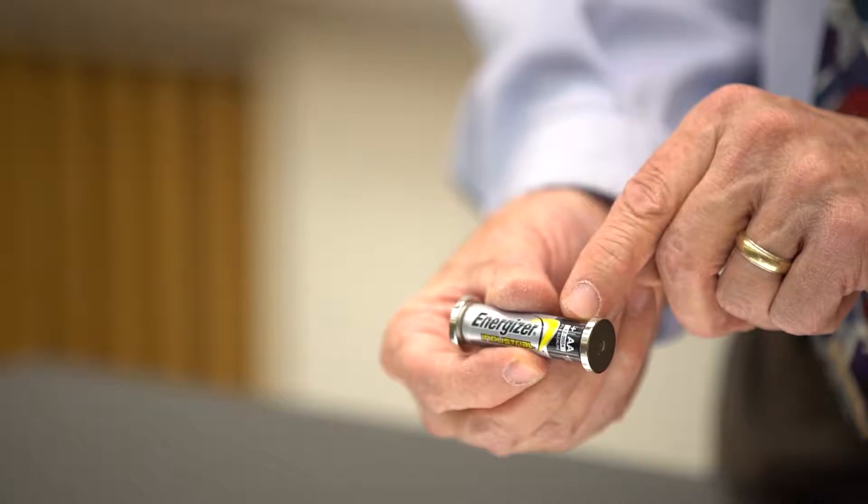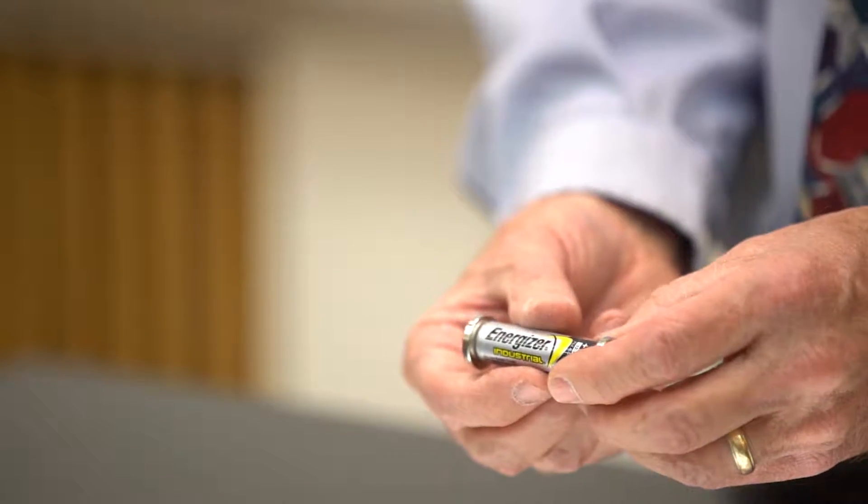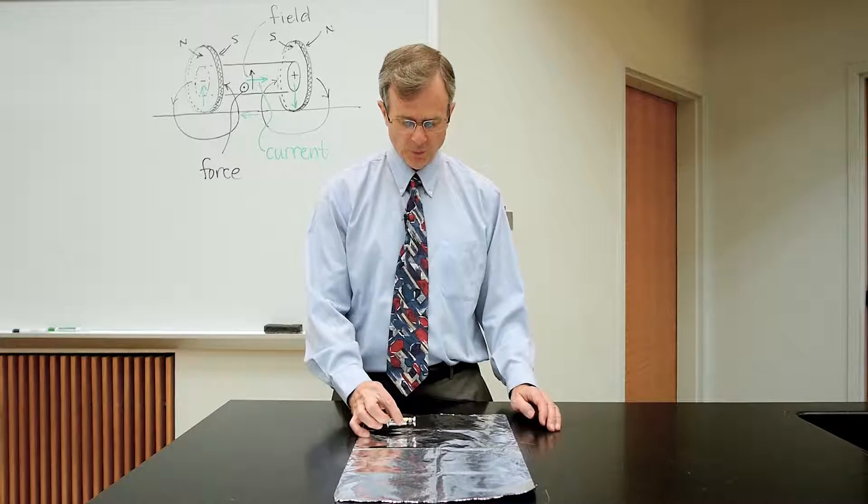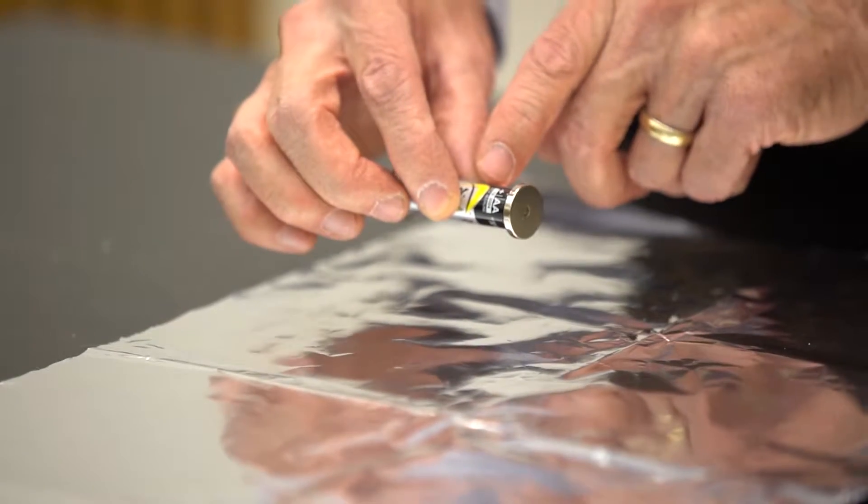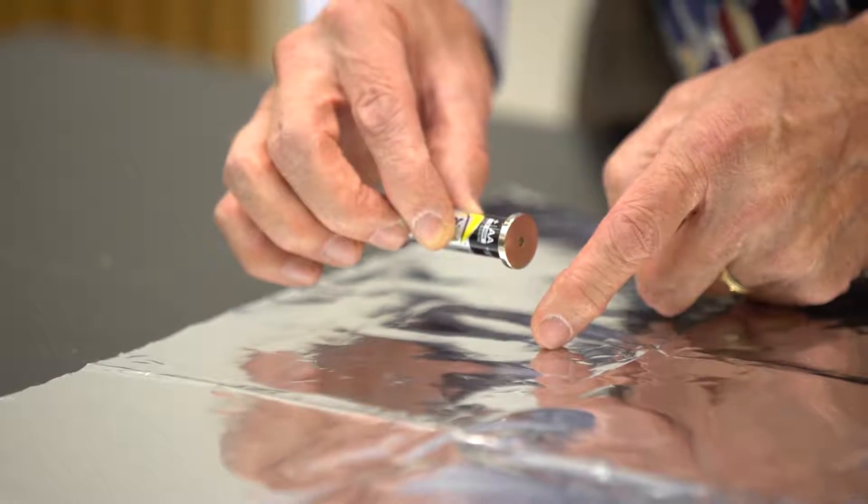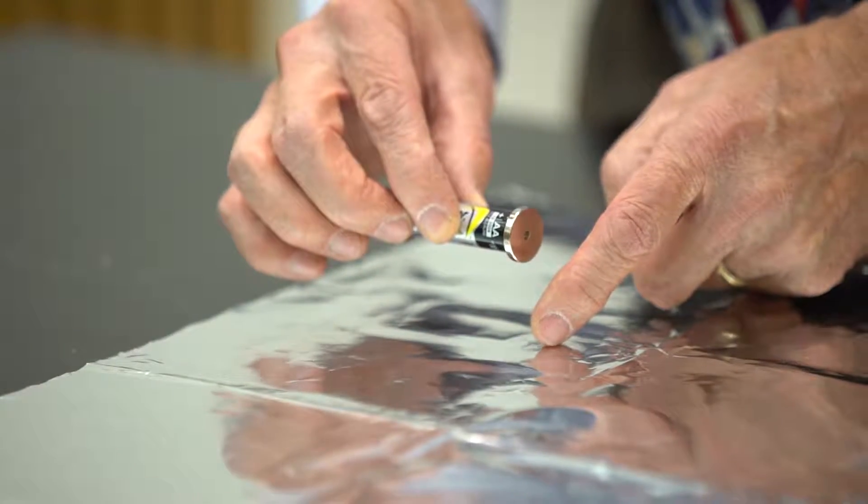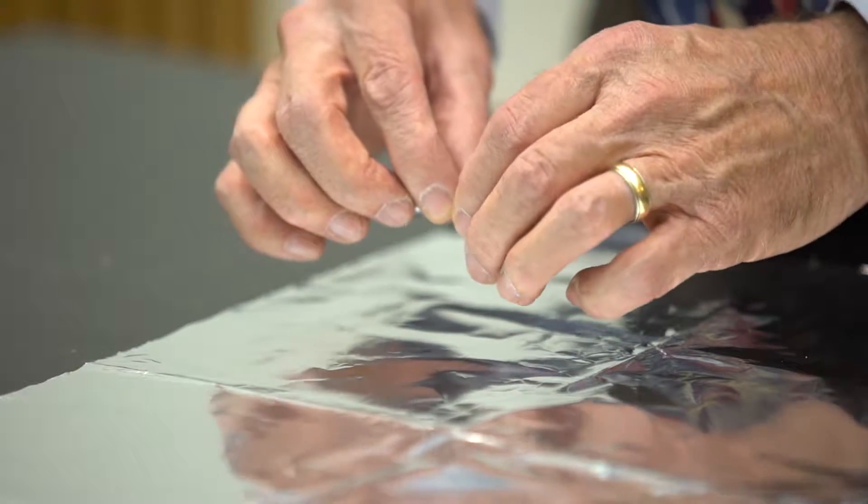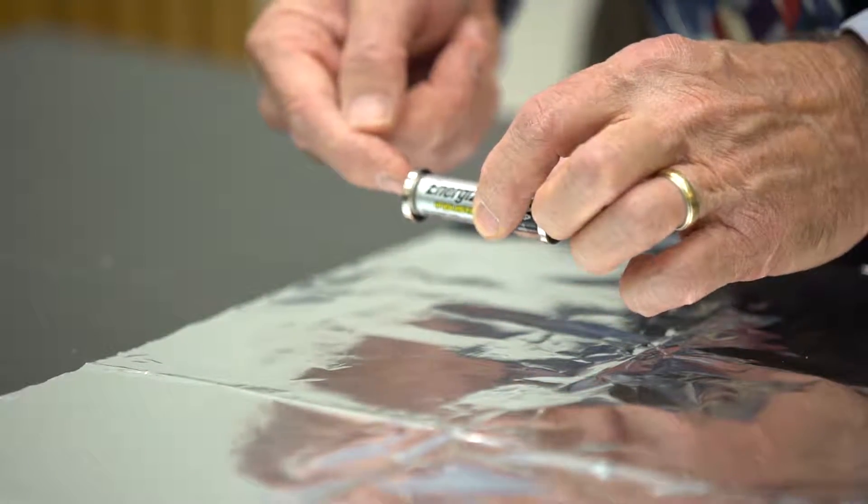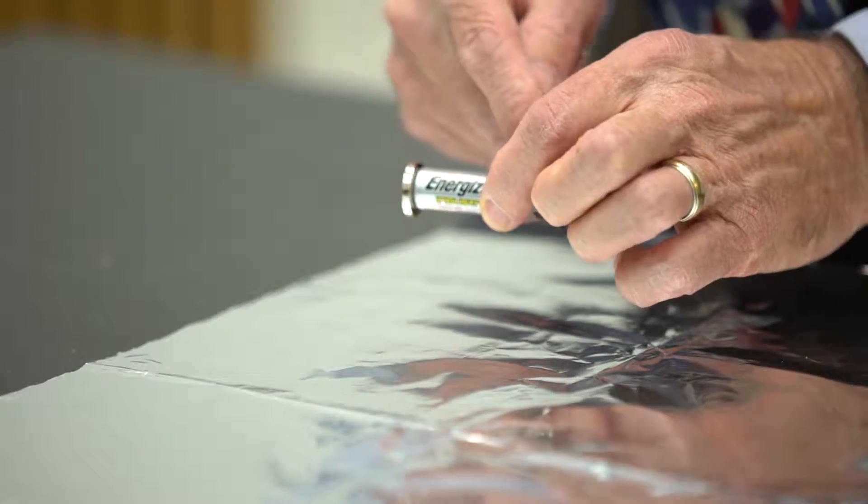This is the positive side of the battery and the negative side of the battery. So what's going to happen when I place this down on the aluminum foil is that the battery is going to drive a current through this magnet, down to the foil, across the foil, and then back up this side, and then through the battery again.